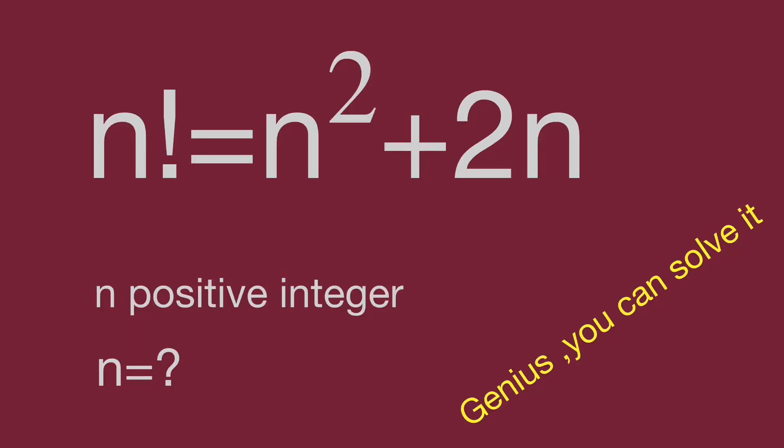Hello, you are watching Balahibo Math Genius Readers. This is an interesting question. For n factorial equal to n squared plus 2n, where n is a positive integer, find the value of n.